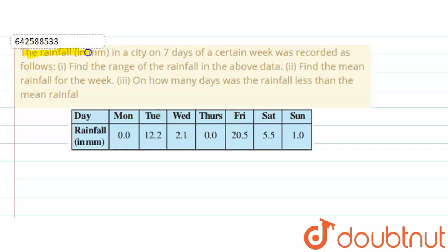The rainfall in millimeters in a city on seven days of a certain week was recorded as follows. There is a table given for the rainfall of a certain week for seven days, so we have to find three parts.